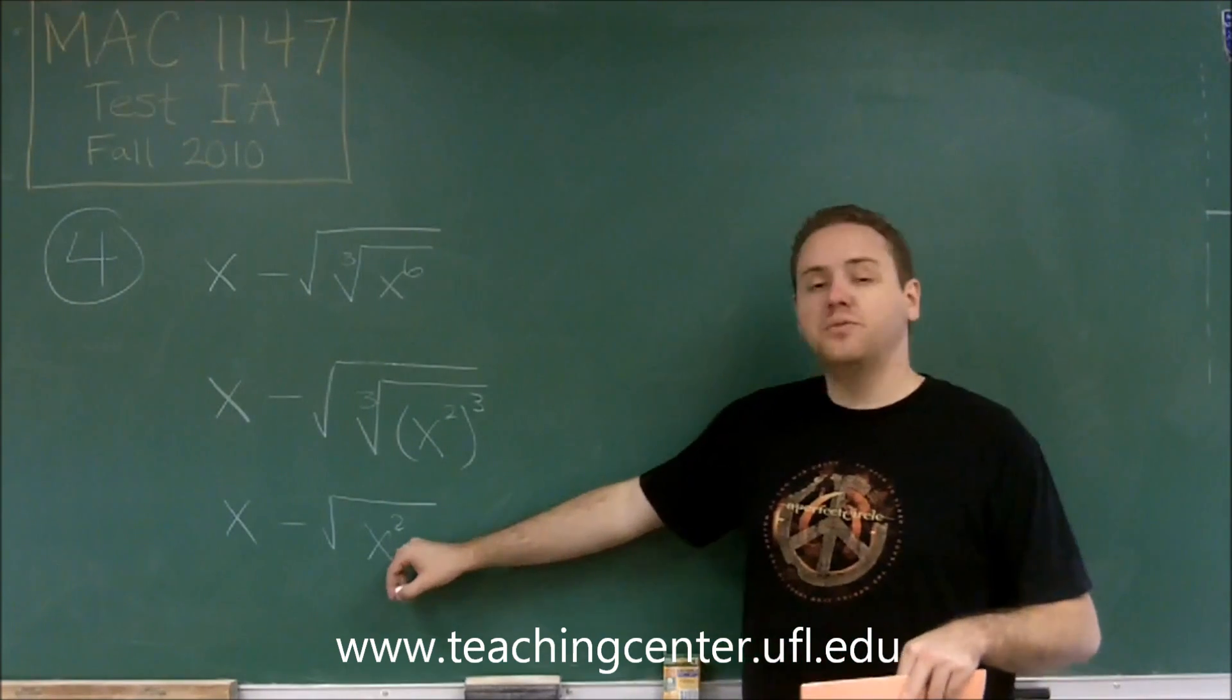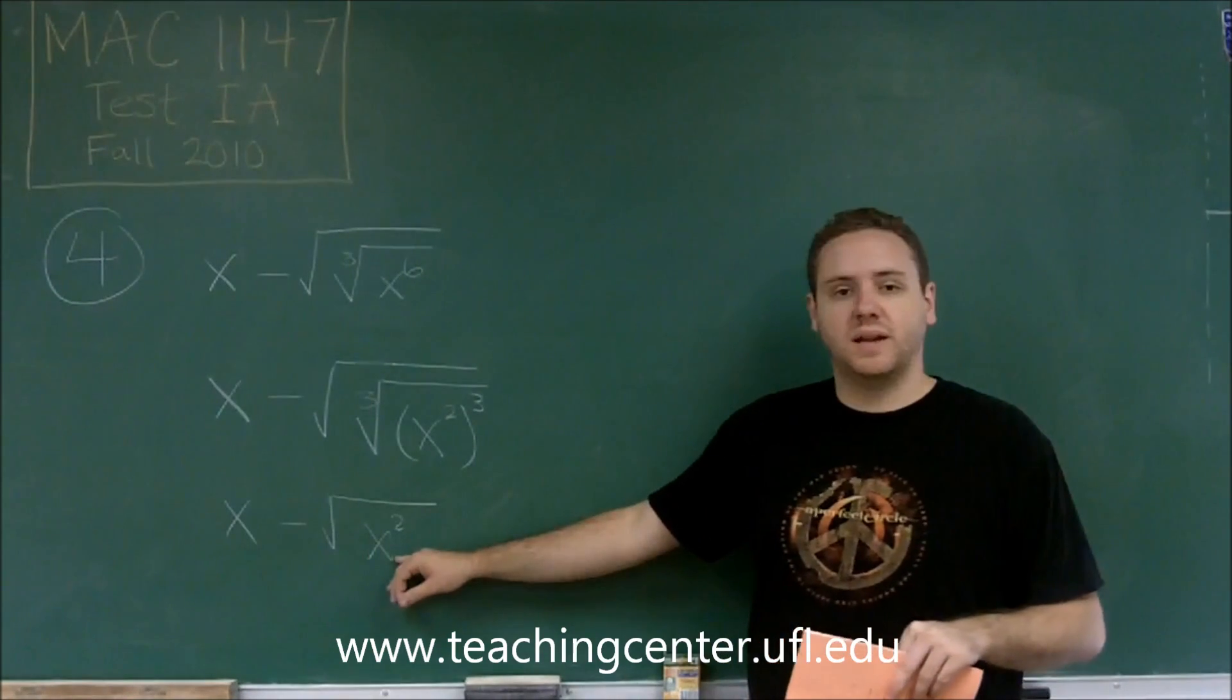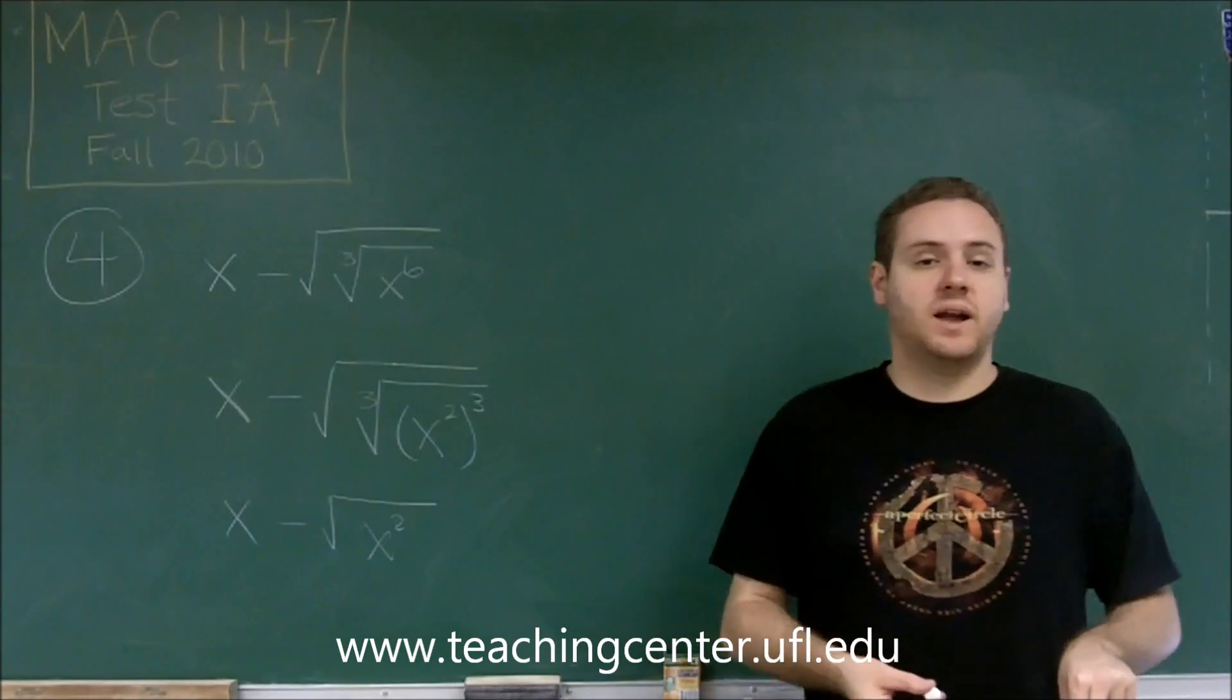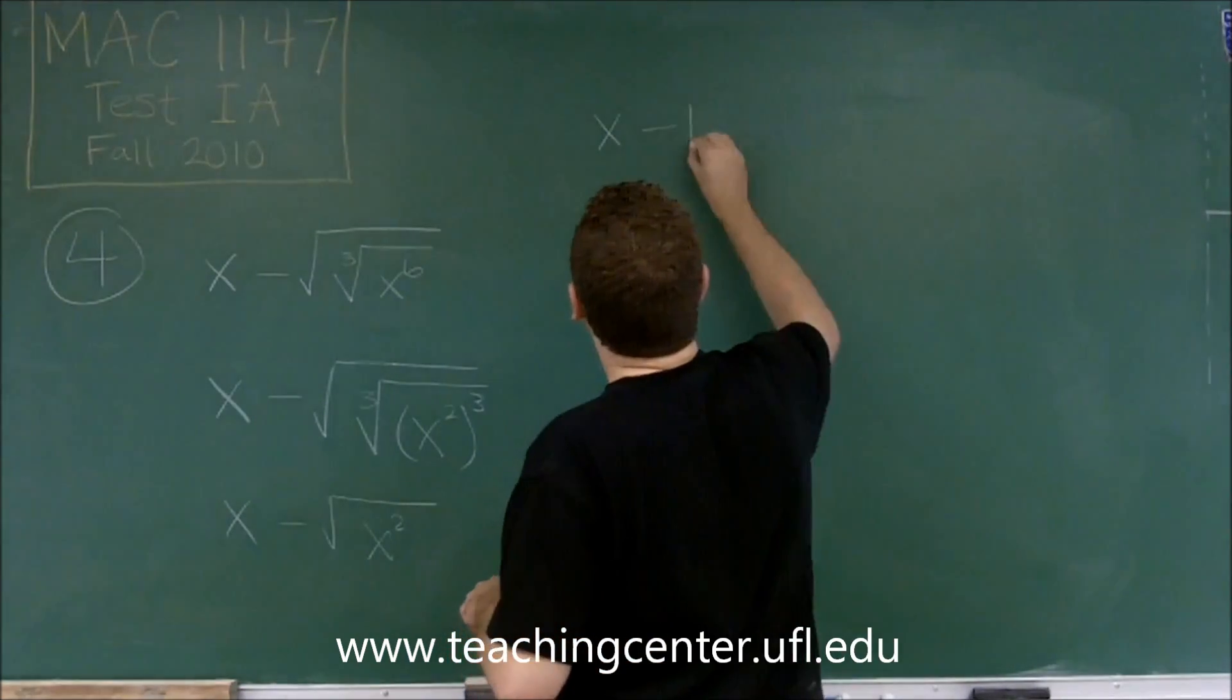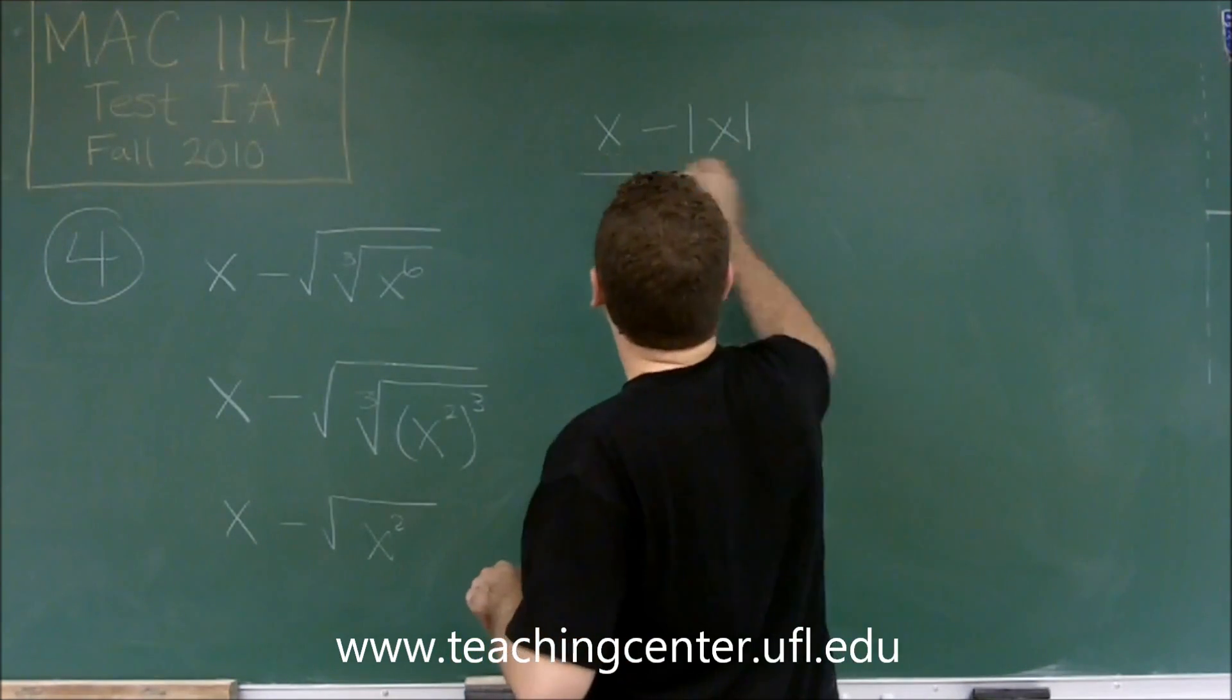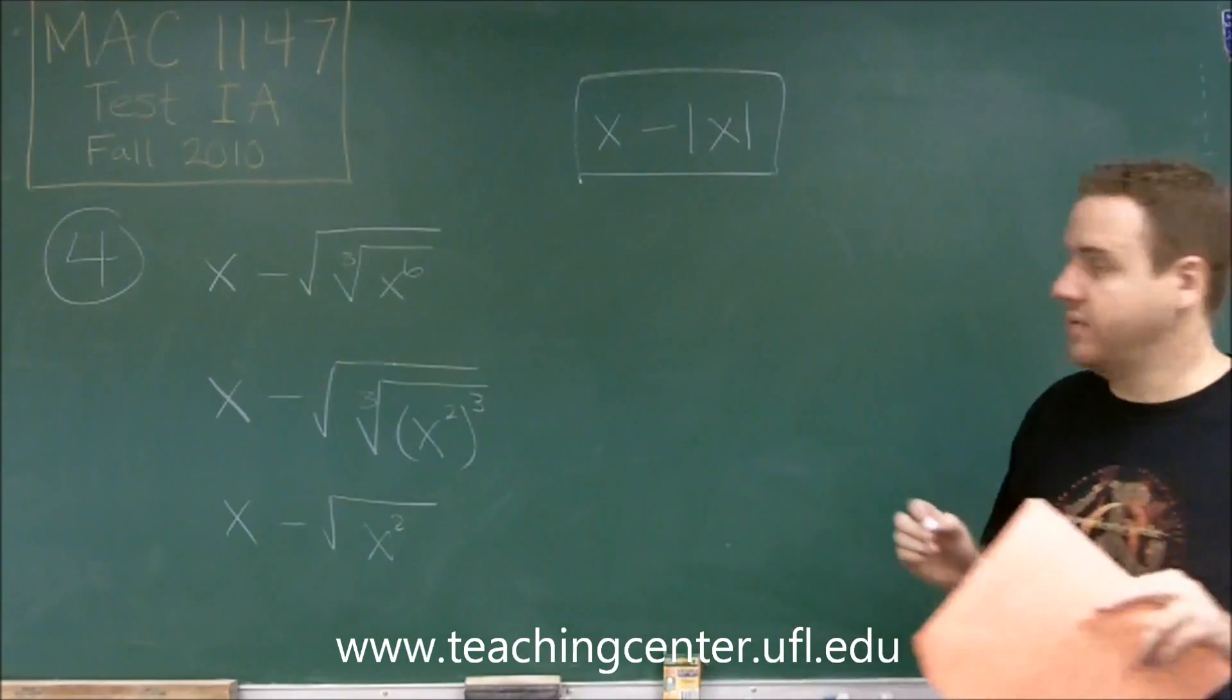So even though our x is negative 2, that expression gave us 2. But if we plugged in 2 for x, 2 squared is 4 and the square root of 4 is 2. Then it's fine. So no matter what we plug in, positive or negative, we always get the positive answer out. So that's an absolute value.